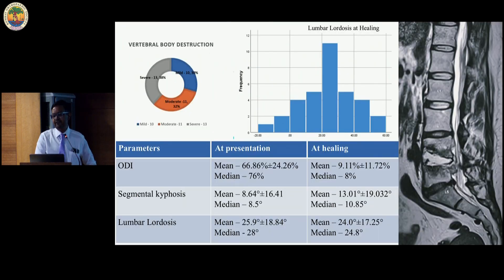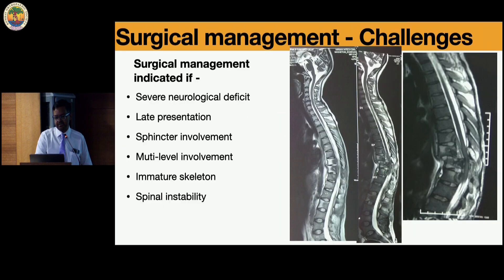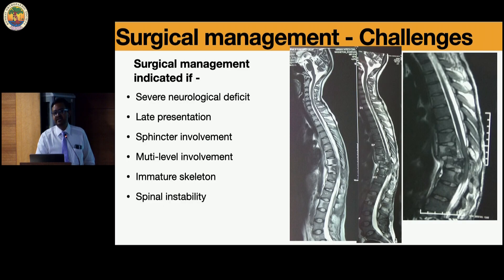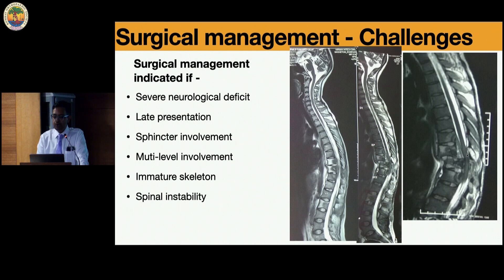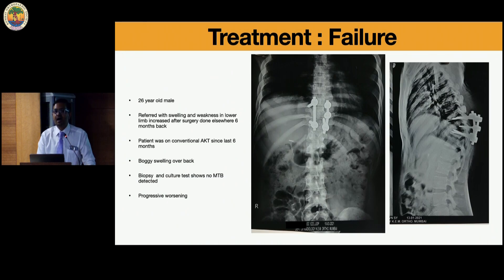We should try conservative management first. Surgery is reserved for severe deficit. For example, this patient was offered bracing but did not return — within three months there was significant destruction, translation instability, cord impingement, cord signal changes, and complete paraparesis. It is very important to maintain regular follow-up of these patients.